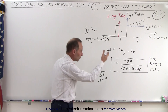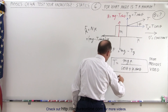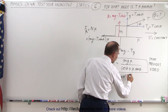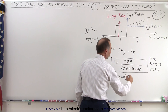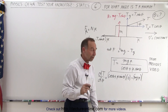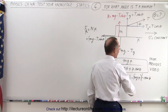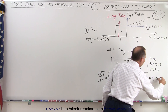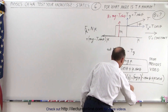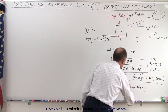We're trying to find the derivative, and we have a quotient, so we take the denominator — cosine of theta plus mu times the sine of theta — times the derivative of the numerator, which is a constant, so that would be times zero, minus the numerator, mg·mu, multiplied by the derivative of the denominator. The derivative of the cosine is negative sine, and the derivative of the sine is the cosine, so we get plus mu times the cosine of theta, all divided by the denominator squared, which is cosine of theta plus mu times the sine of theta, all squared.